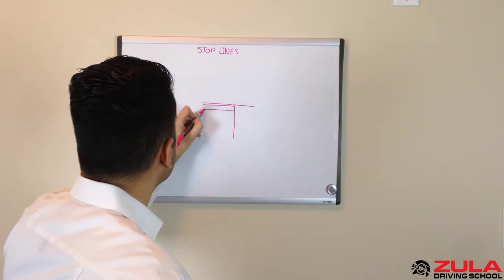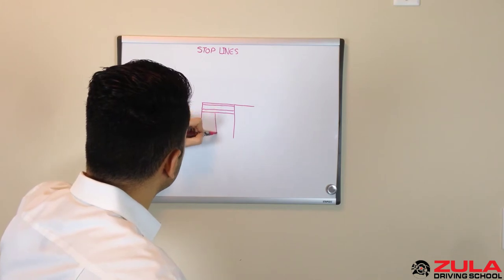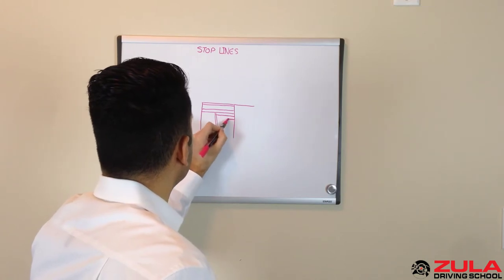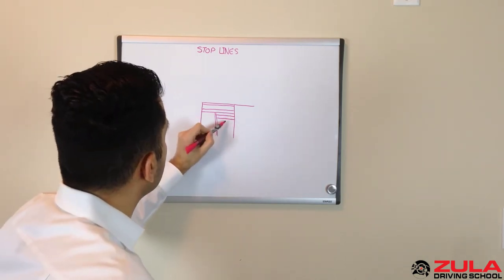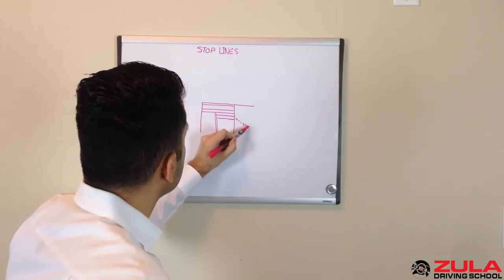So you will have, let's say this is a crosswalk area. This is the center divide line. And then you get this line here and it's a white line. And this one here is the stop line.